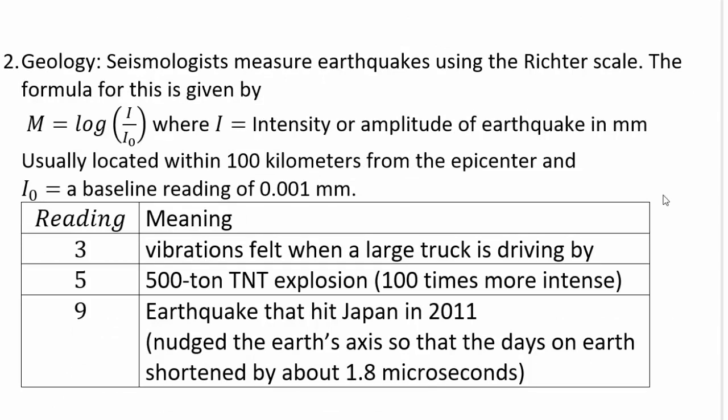Geologists measure earthquakes using the Richter scale, given by the formula log(I / I₀), where I₀ is the baseline reading of 0.001 millimeters and I is the amplitude of the earthquake in millimeters. When there's an earthquake, there is movement in the earth's crust and waves go up and down; the distance from rest to the highest point of the wave is its amplitude. A reading of 3 means vibrations similar to a large truck driving by, while a reading of 5 is like a 500-ton TNT explosion. Remember it's base 10, so that difference of 2 means 10² = 100 times more intense.